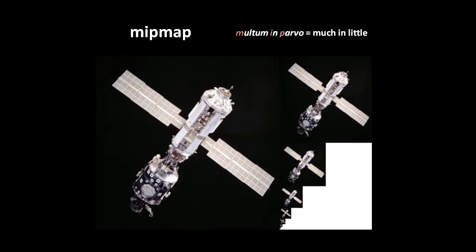The idea of a MIP map is that we pre-compute minified versions of our original texture using the area sampling technique instead of bilinear filtering. Our rendering engine then chooses the best matching version of the texture to render from based upon the distance of the surface — the further away, the smaller the chosen image. Here, for example, you see the original full-size texture on the left, and then successively shrunk-in-half versions on the right. Because these minified versions are generated by area sampling, they more accurately reflect the original image than if they were generated by bilinear filtering.